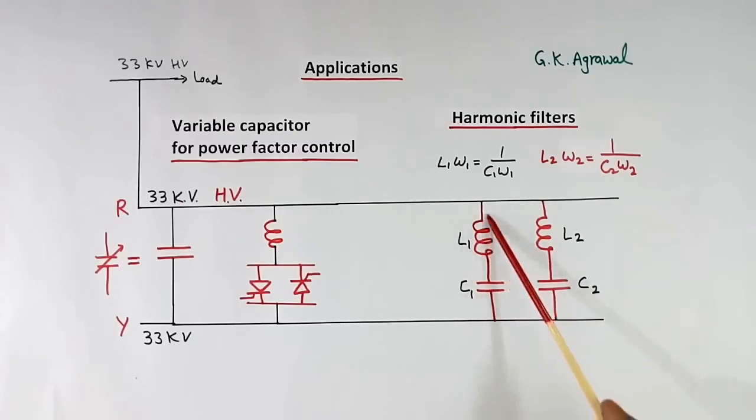So at a certain frequency, impedance here becomes very low. So harmonics of that frequency will flow here, because here impedance is low. Current always tries to find low impedance path.